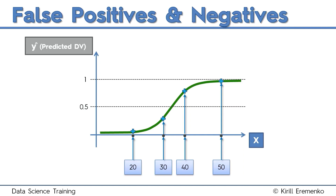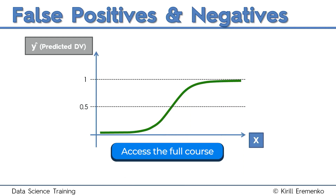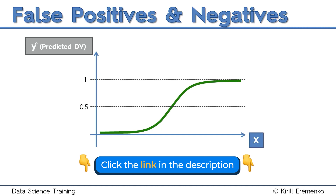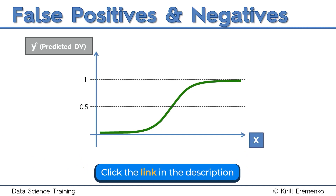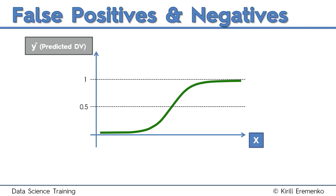Now let's take a step back — where did we get those four values from? We took four random values of the independent variable and looked at what would happen to them using the logistic regression function to find their probability and y-hat values. How about we take another step back and instead of four random values, we take four known values — in fact, four values from our actual data set.